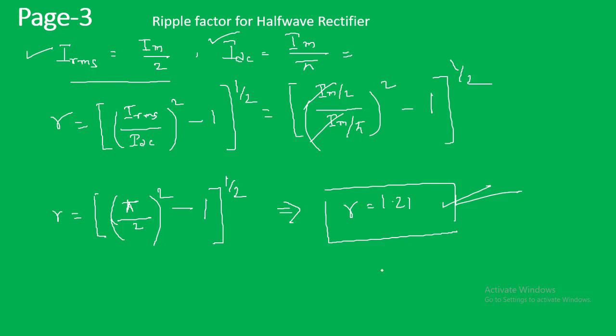This result of 1.21 is very interesting — it means that for a half wave rectifier, the AC component is actually greater than the DC component. So in the rectifier output, the steady DC component we expect is actually less than the ripples present. This makes the half wave rectifier output very difficult to use directly for electronic circuits.